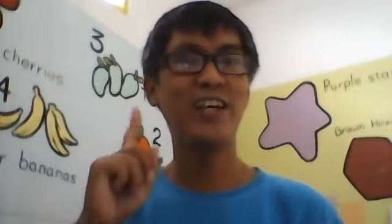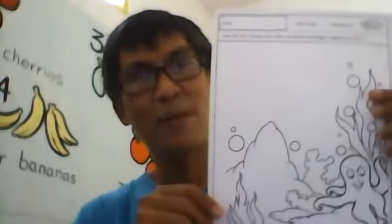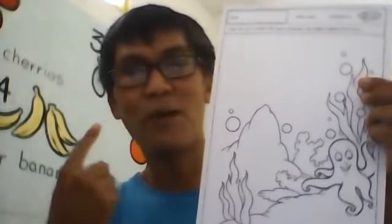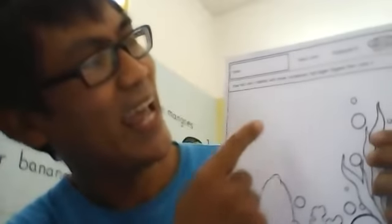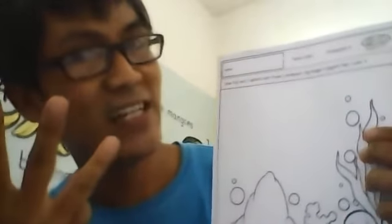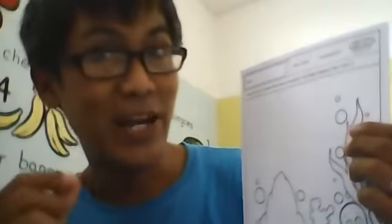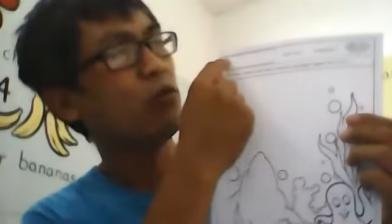My friends, today we will draw and color a picture about the ocean. This is the picture that we are going to add more to. Now let's read the instruction first: draw fish and three starfish with three comparisons — big, bigger, and biggest — then color it. First of all, what should we do? Write your name here.